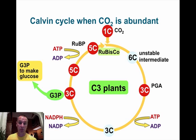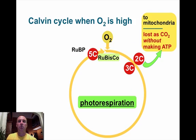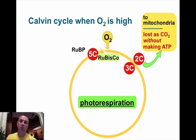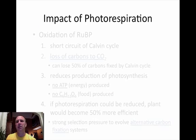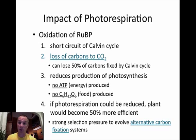It's called a C3 plant because it involves three carbons. Now, if the Calvin cycle has a high oxygen content, oxygen binds to the five-carbon RuBP and — bada bing bada boom — you have carbon dioxide being released. This is called photorespiration. The impacts of photorespiration are significant: the Calvin cycle stops, you have a loss of carbon dioxide needed for the Calvin cycle, no ATP is produced, no glucose is produced — which is plant food — and the plant has to figure out a way to overcome this or it can't survive.